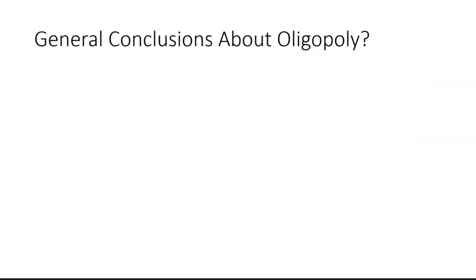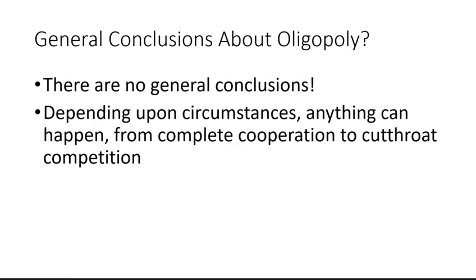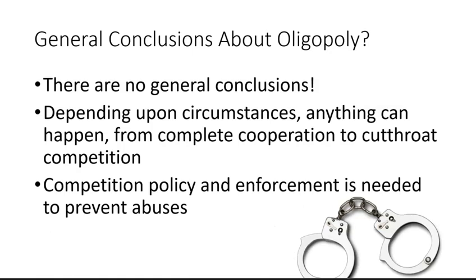So what can we say about oligopoly? In general, we can't really say very much. Firms may find a way to cooperate or they may not — they may act as rivals, or they may carry out tacit collusion or criminal conspiracies. That's what makes the analysis of this kind of market so difficult. But what certainly is true is that to protect the public interest, competition policy is needed to prevent the kind of abuses we saw in fixing the price of bread.